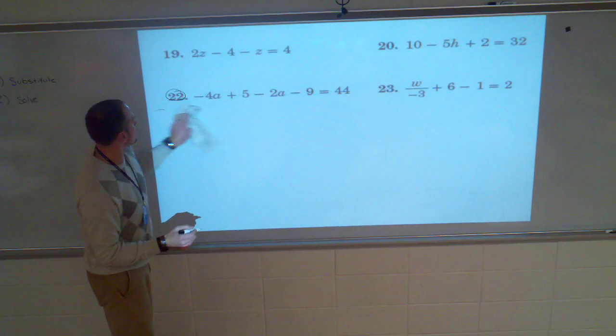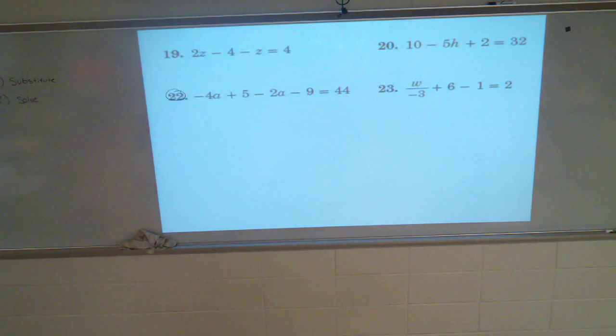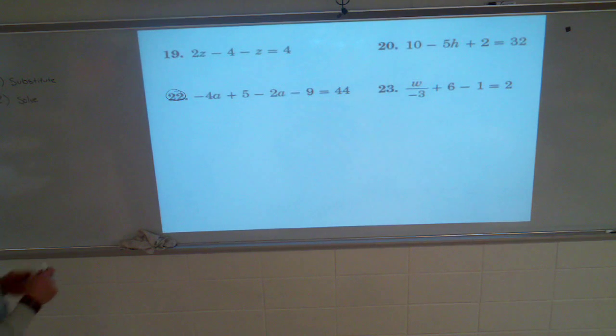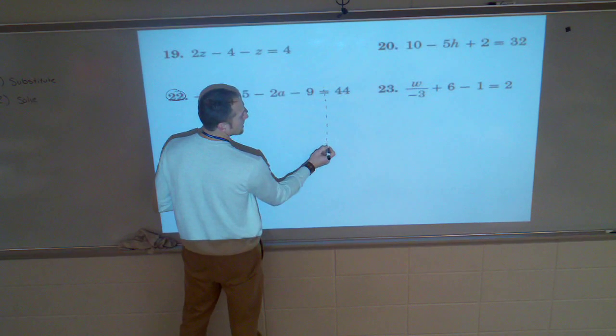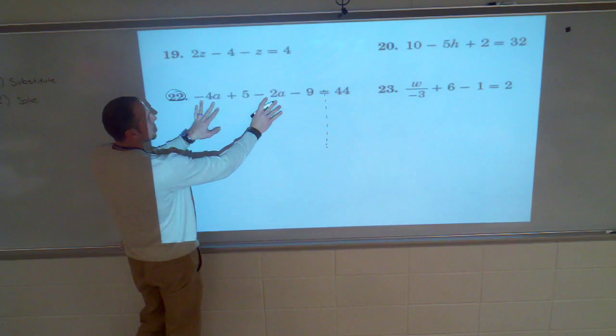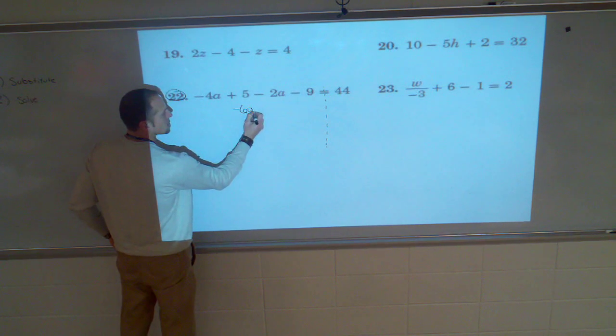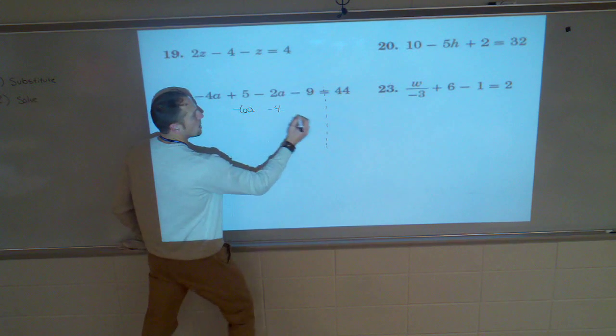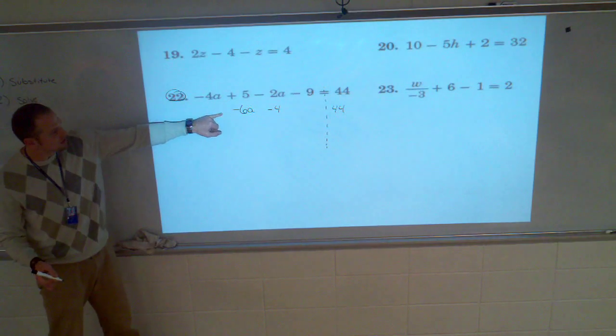Next thing. Solve number 22. Now, I'm not a big fan of this phrase cross the line, change the sign, but it's pretty applicable here. We need to combine our a's, but I don't need to take it across the line. I just need to combine them, so I'm not changing any signs. Negative 4a, negative 2a is going to be negative 6a. And as I'm combining these right here, positive 5, negative 9, this is going to be negative 4 is equal to 44. So make sure that you have this line somewhere: negative 6a minus 4 equals 44.